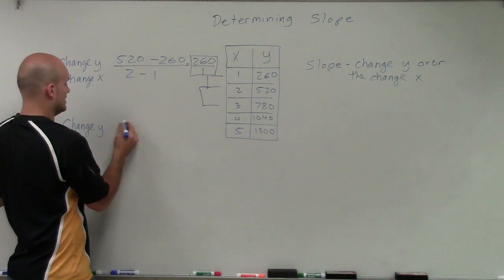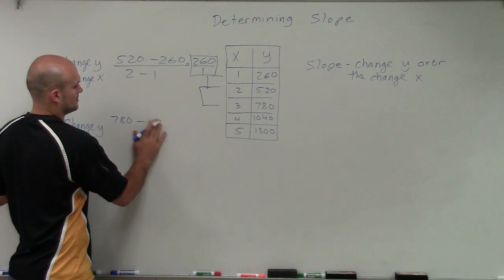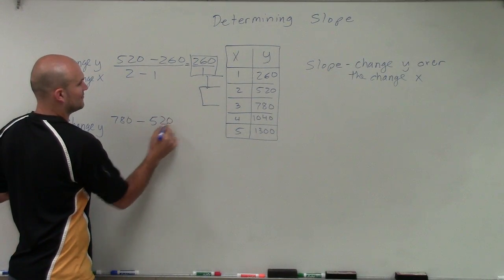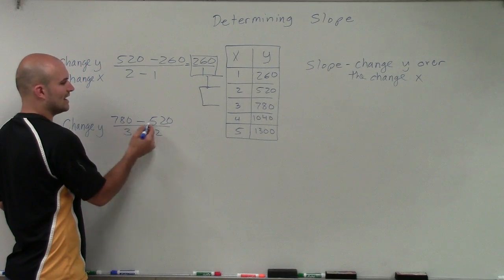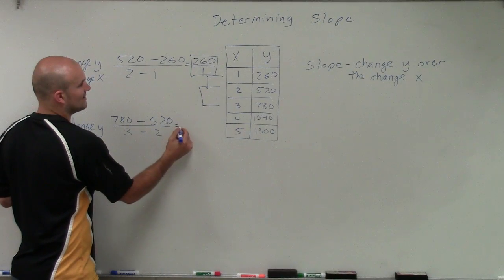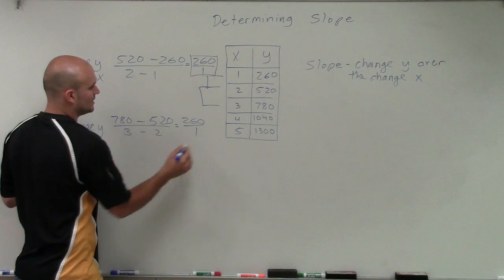So here my change in y is going to be 780 minus 520 over 3 minus 2. So 780 minus 520, that's going to equal 260 over 3 minus 2, which equals 1.